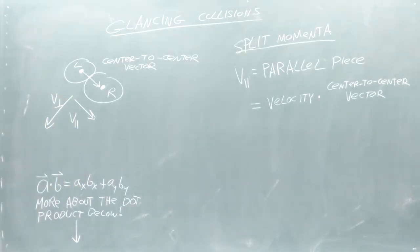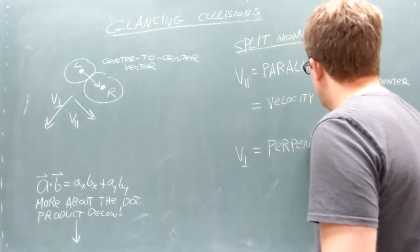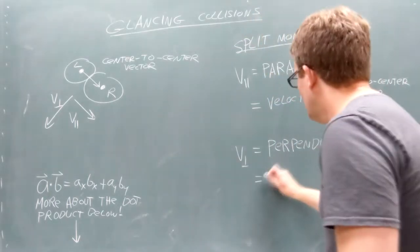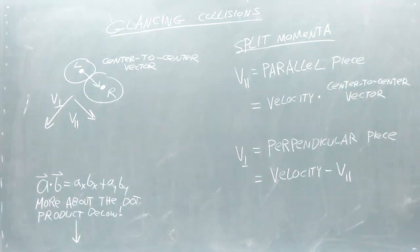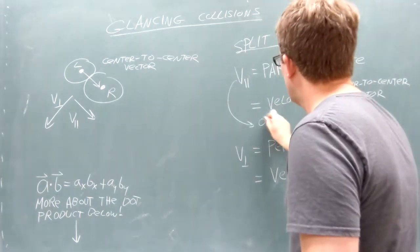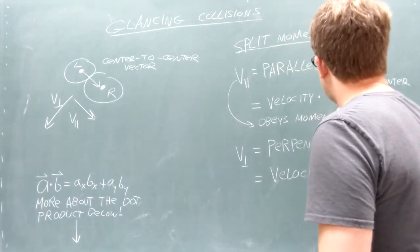The other piece of the velocities points perpendicular to the center-to-center vector. We'll calculate this piece of the velocities by subtracting the parallel piece from the original vector.